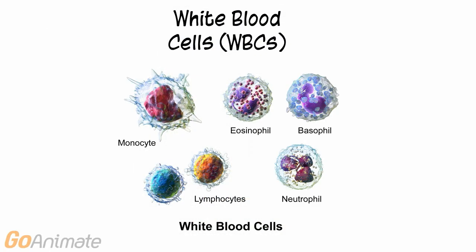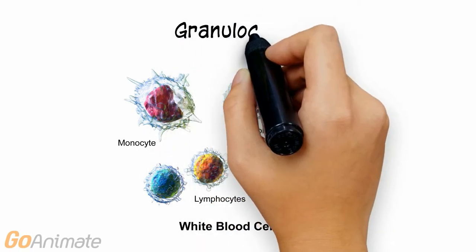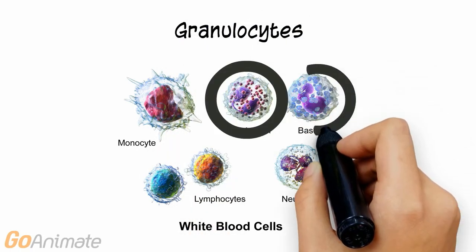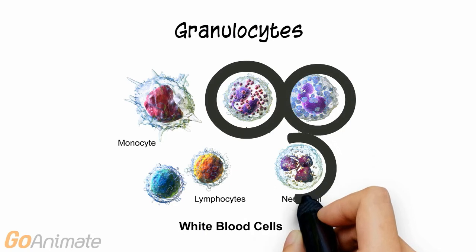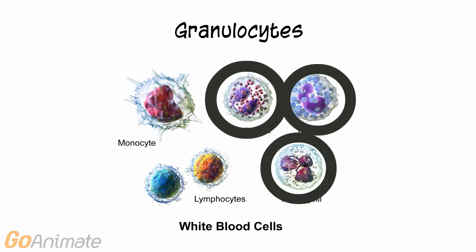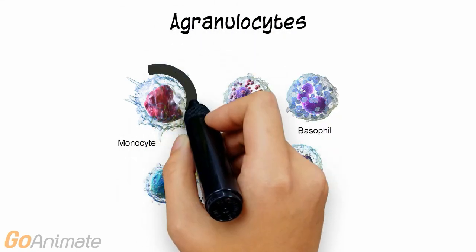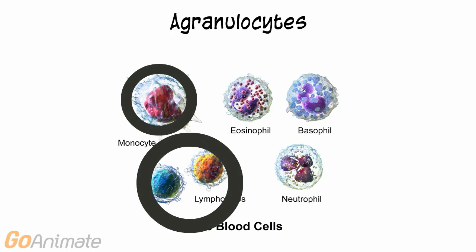Let's look at white blood cells, or leukocytes, next. White blood cells can fall into two classifications. Those with a granular cytoplasm are called granulocytes, and these include neutrophils, basophils, and eosinophils. Those without a granular cytoplasm are called agranulocytes and include the monocytes and lymphocytes.